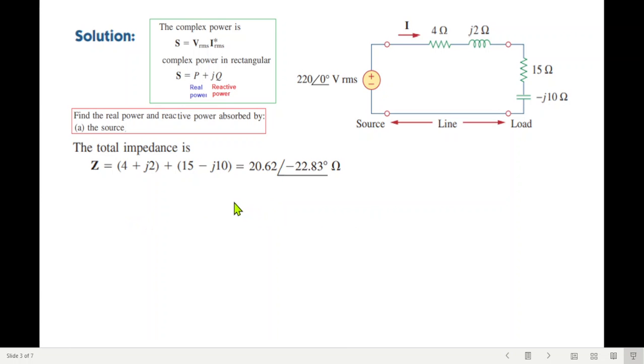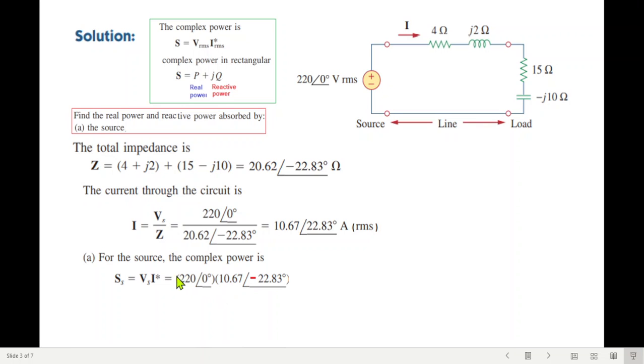So Z is calculated. Now current, we know V over Z. So V over Z, 220 over Z gives the total current which is 10.67 angle 22.83 amperes.